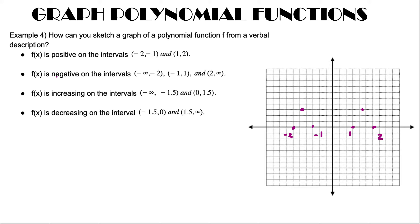The negative interval goes from minus 2 to minus infinity, so from minus infinity to minus 2 the function is down. Then from minus 1 to 1 the graph is also down. And from 2 to infinity the function is negative, so it goes down again.